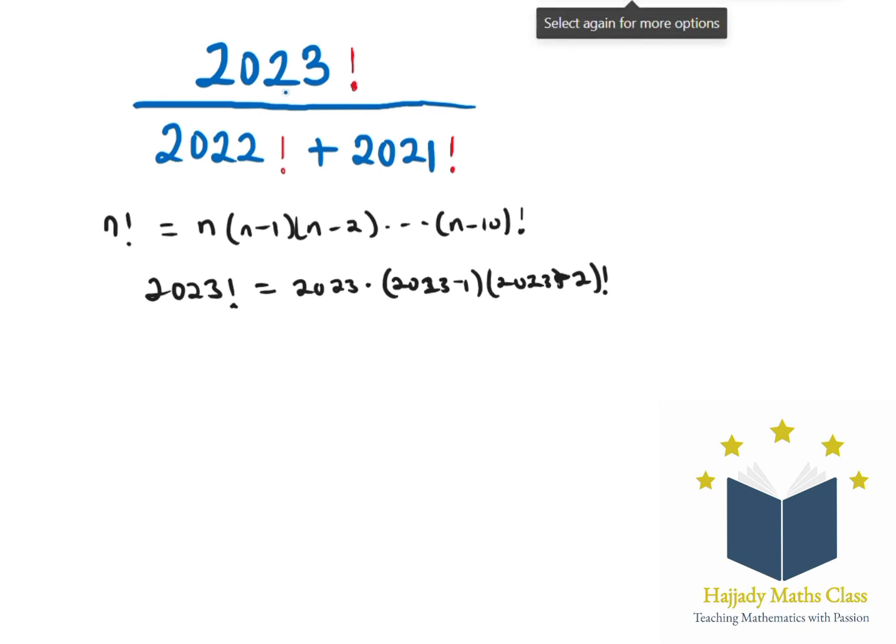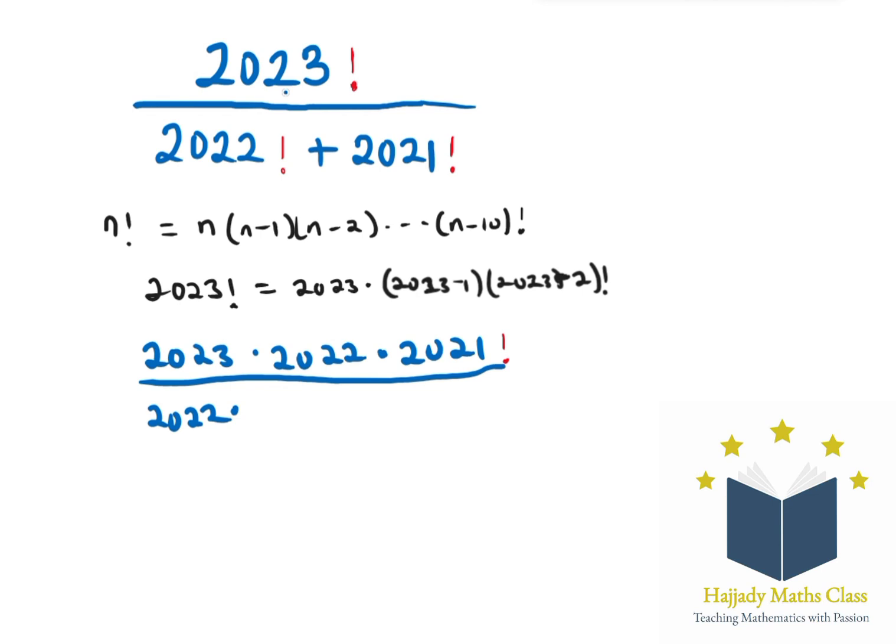We can have 2023 multiplied by 2022 multiplied by 2021 factorial. That is, it decreases by 1 using the same rule above. So here we have 2021 factorial written the same way.